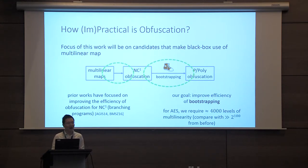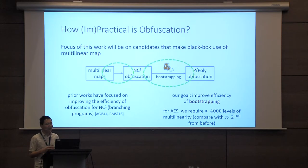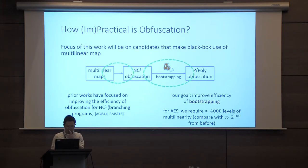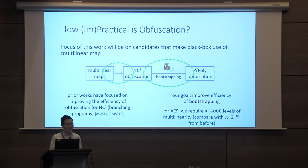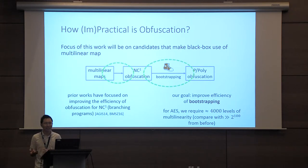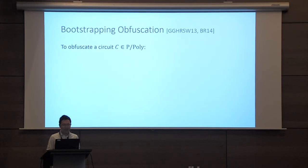Let me give you a high-level summary of our main result on the obfuscation front. To obfuscate AES using our new construction, we require a multilinear map capable of supporting about 4,000 levels of multilinearity. Compared to existing work, this is many, many orders of magnitude of improvement — we went from 2 to the 100 to roughly 2 to the 12.